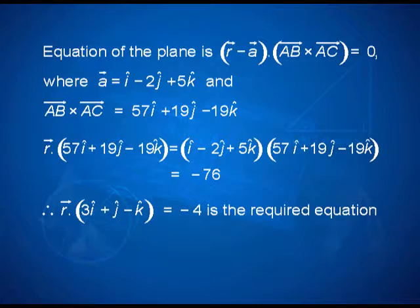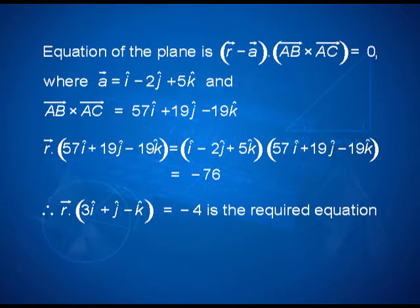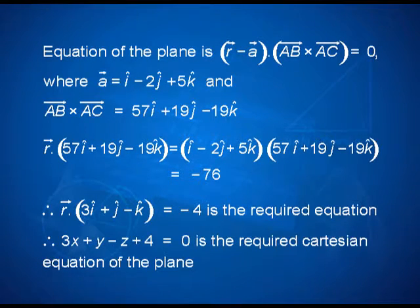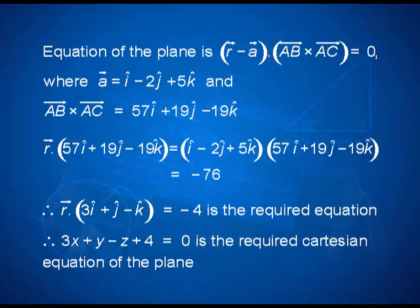To rewrite in Cartesian form, replace vector r with x·i-hat + y·j-hat + z·k-hat. The dot product gives 3x + y − z = −4, which can be rewritten as 3x + y − z + 4 = 0. That is the required Cartesian equation of the plane.